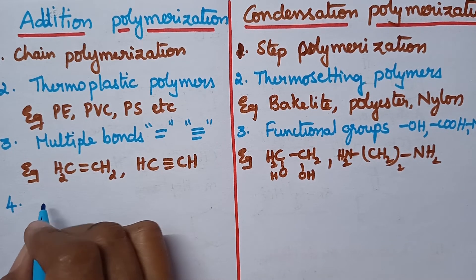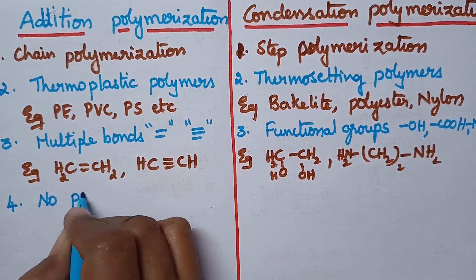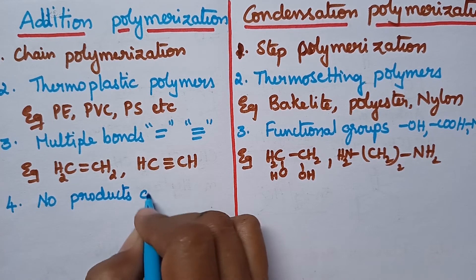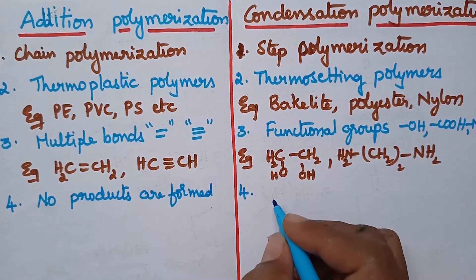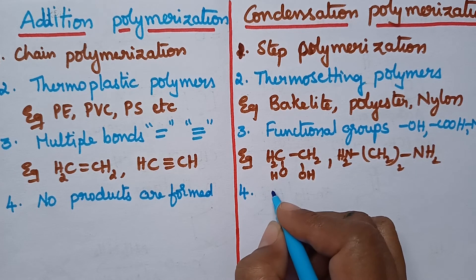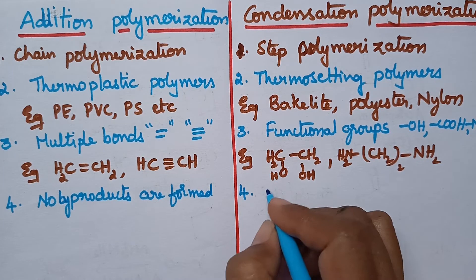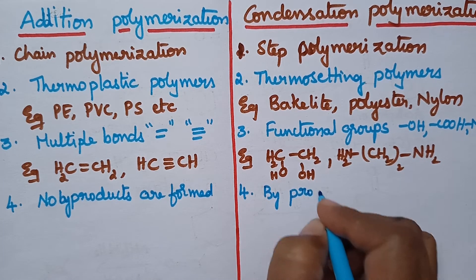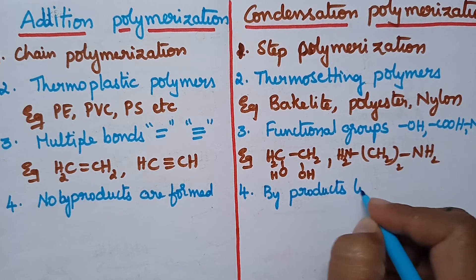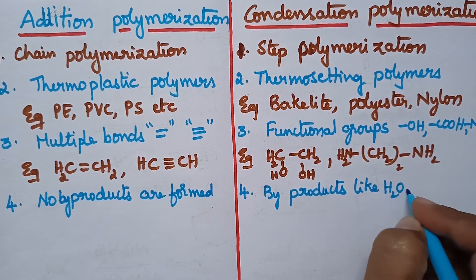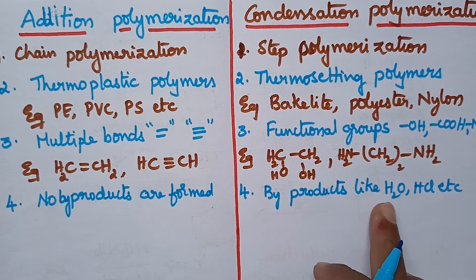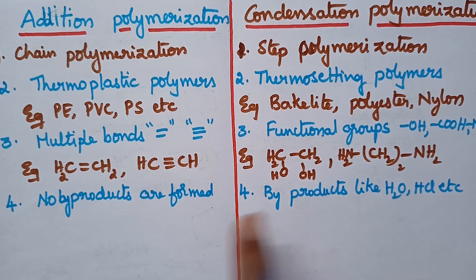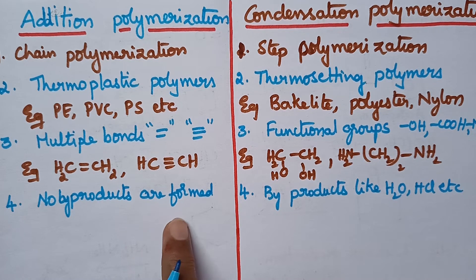During addition polymerization, no byproducts are formed. But condensation polymerization involves the formation of byproducts — elimination of byproducts such as water, HCl, and methanol takes place during condensation polymerization.